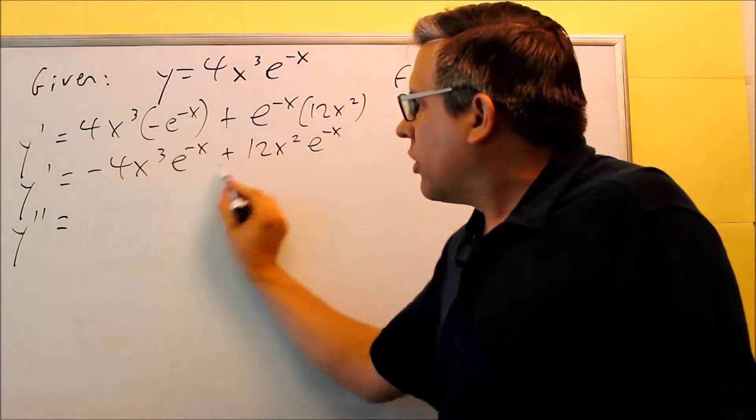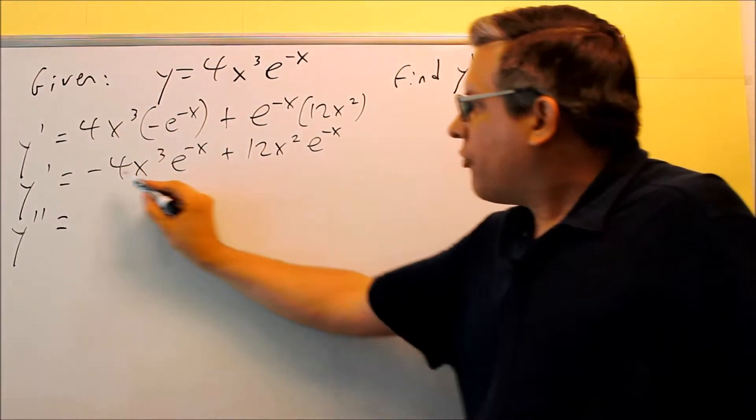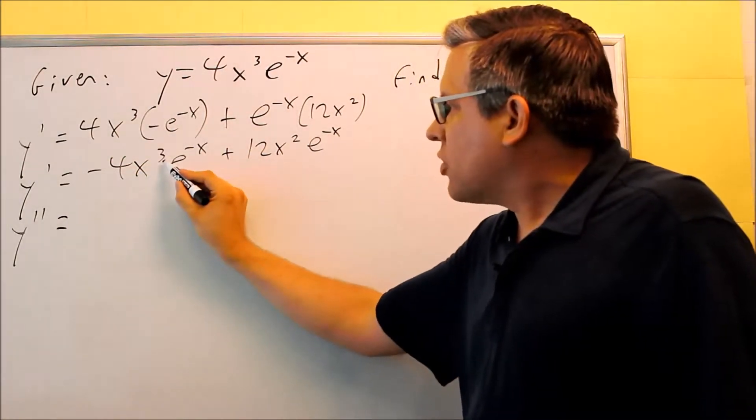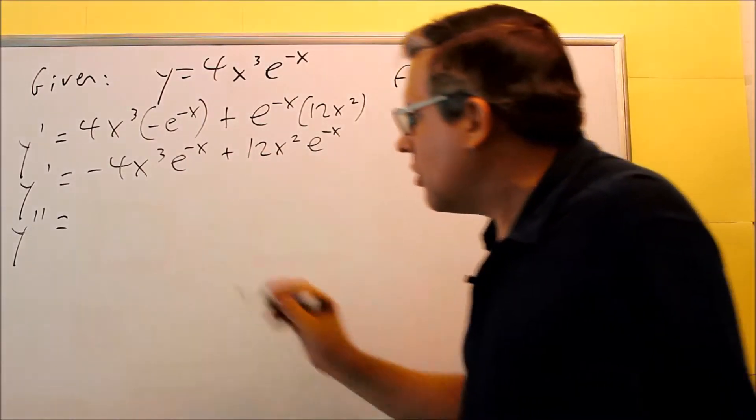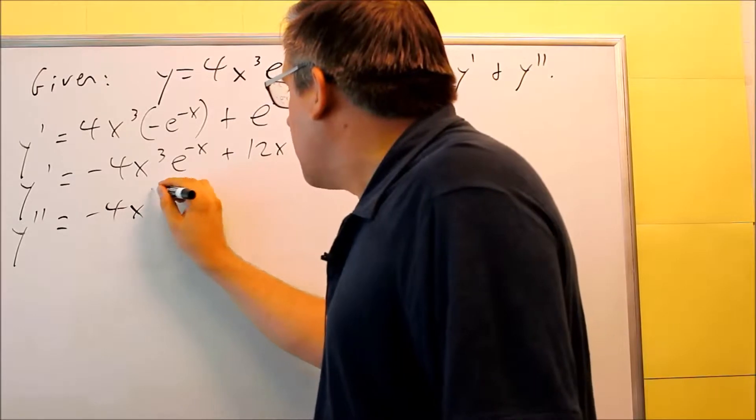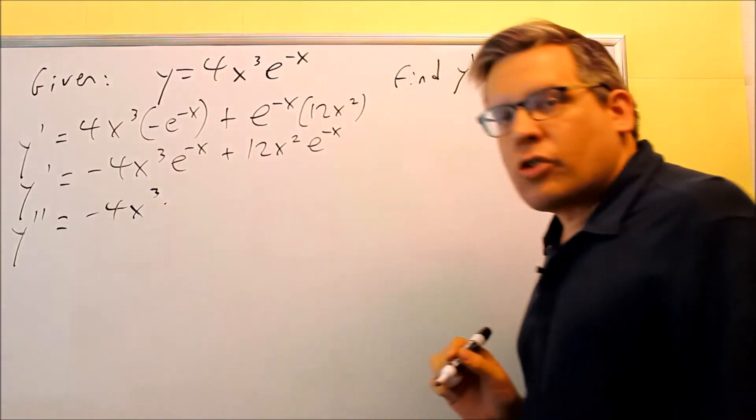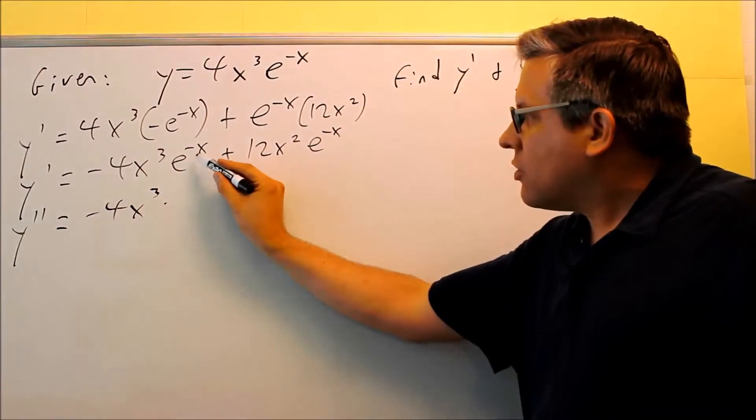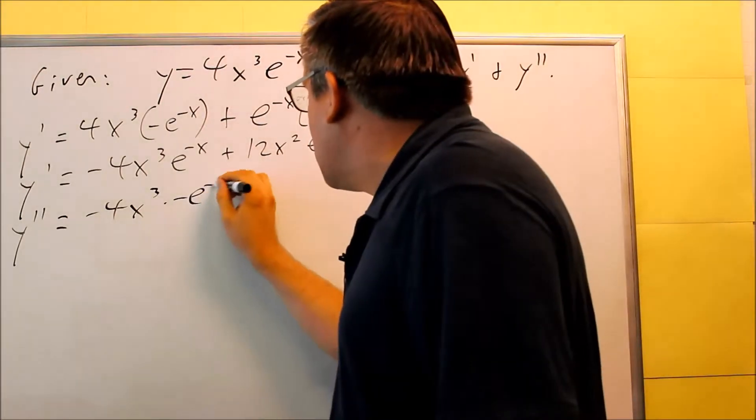We're only going to work with this first piece for right now. Your first term is -4x³, your second term is e^(-x). So the derivative, we have -4x³, we have the first, times the derivative of the second. So again, the derivative of e^(-x) is -e^(-x).